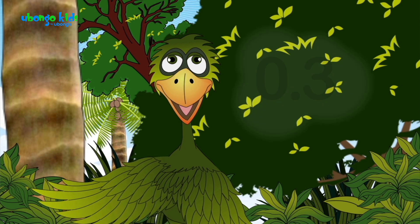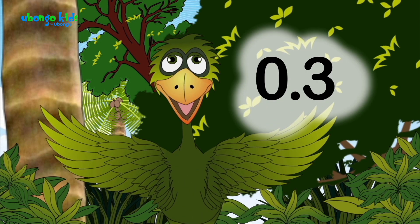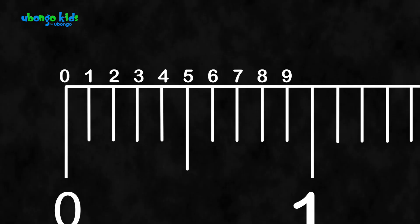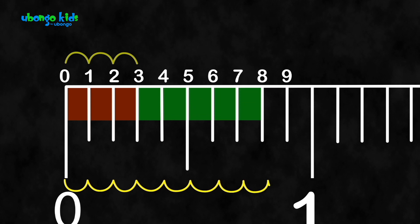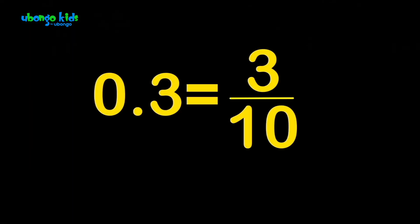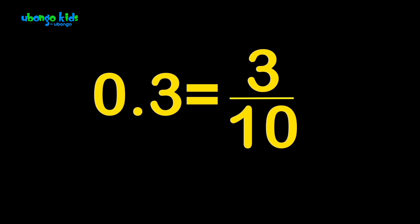Take a look at 0.3. On the number line, you can count up to it: 0.1, 0.2, 0.3. That's because it's 1, 2, 3 out of 10. With decimals, we can now see that the number after the decimal point is a part out of ten.